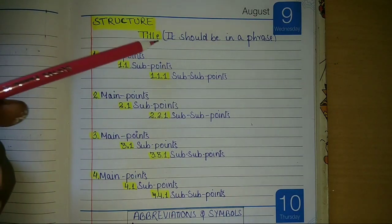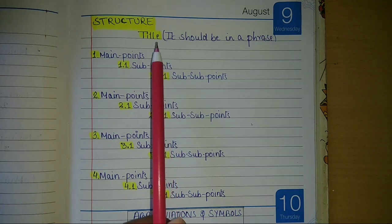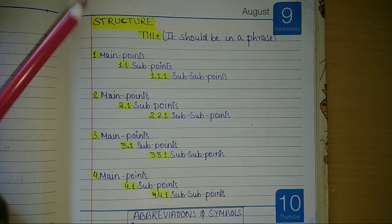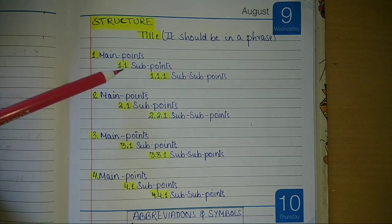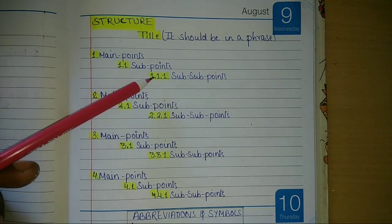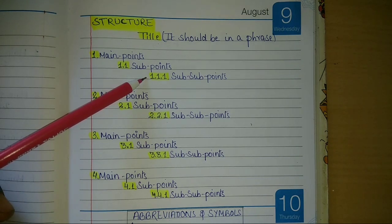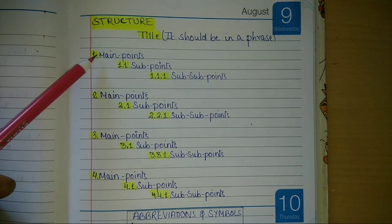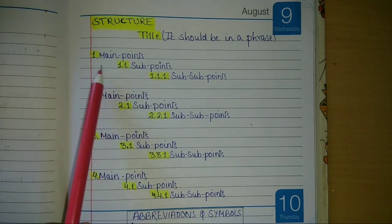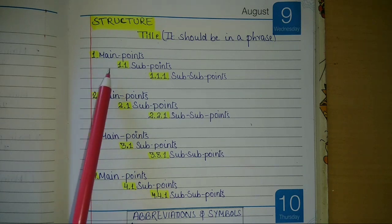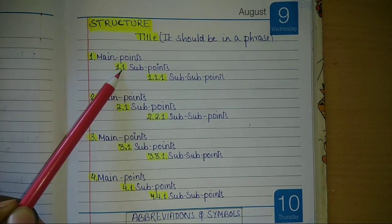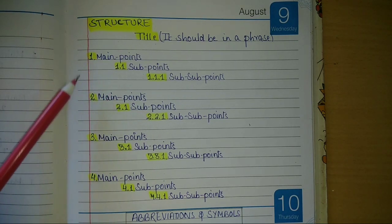This is an ideal structure for note making. First, write the title — it should not be one word; it should be a phrase or a line. After reading the passage, decide what are the main points, what are sub-points, and what are sub-sub-points. Sub-sub-points are rarely needed because within the first and second points we jot down all important information.